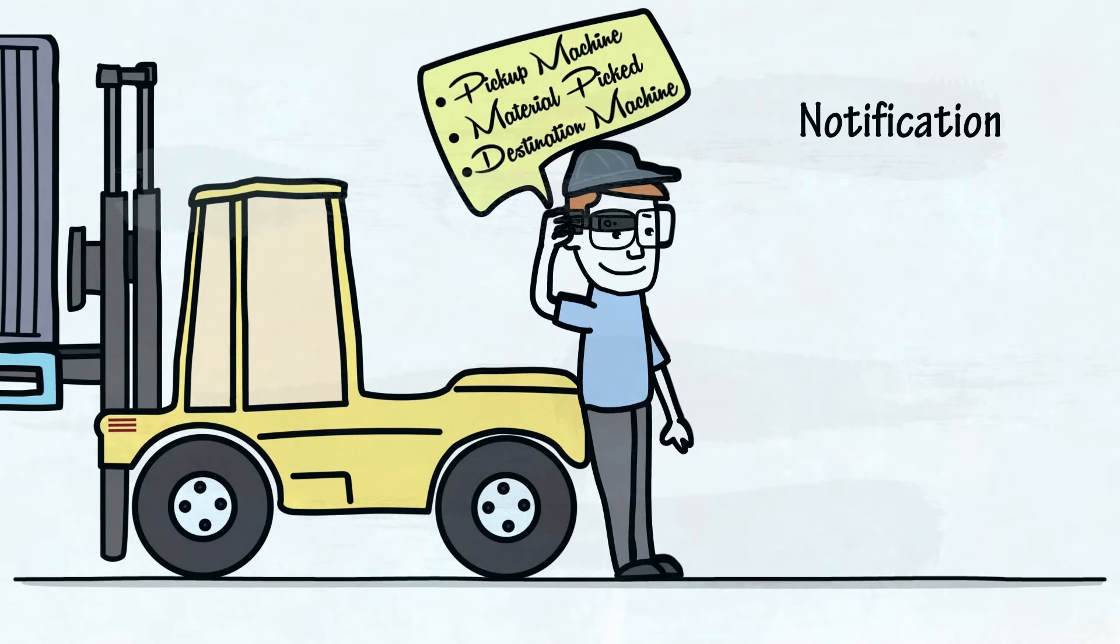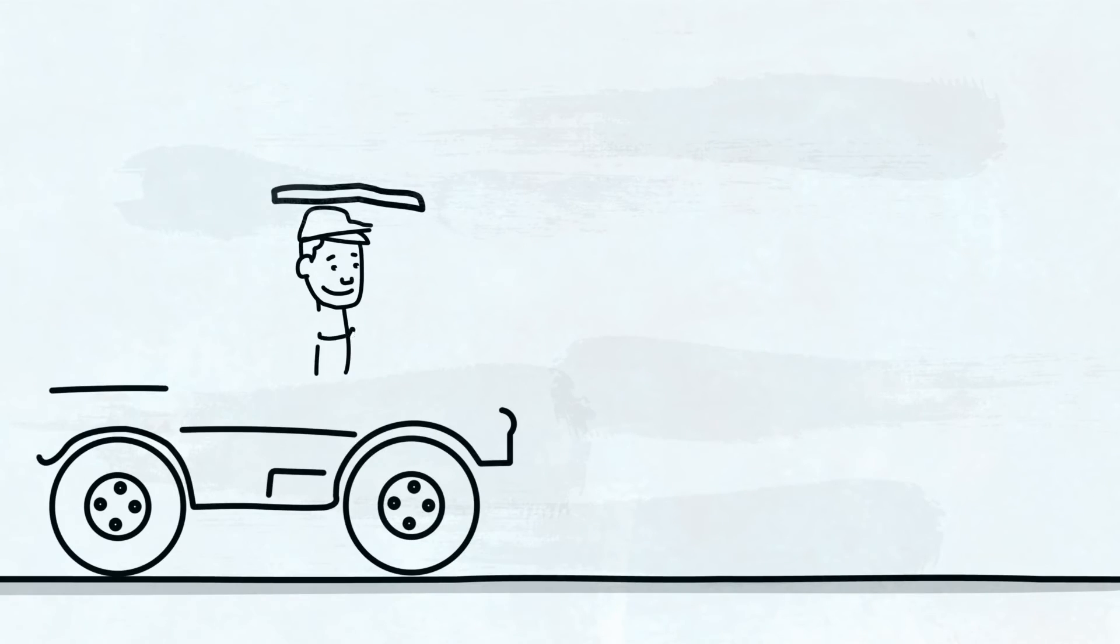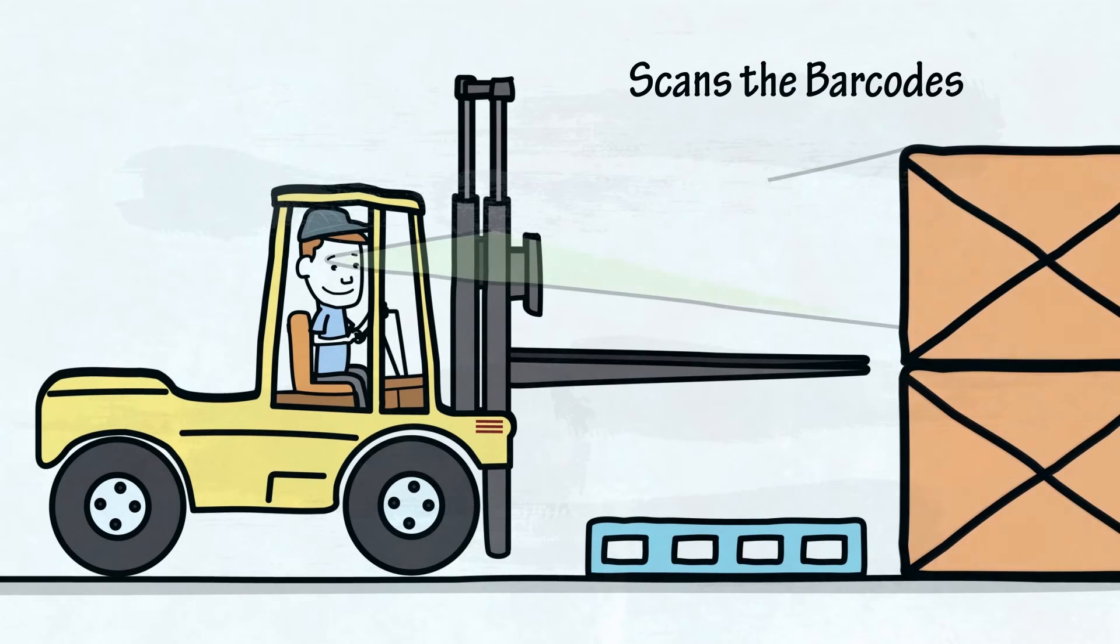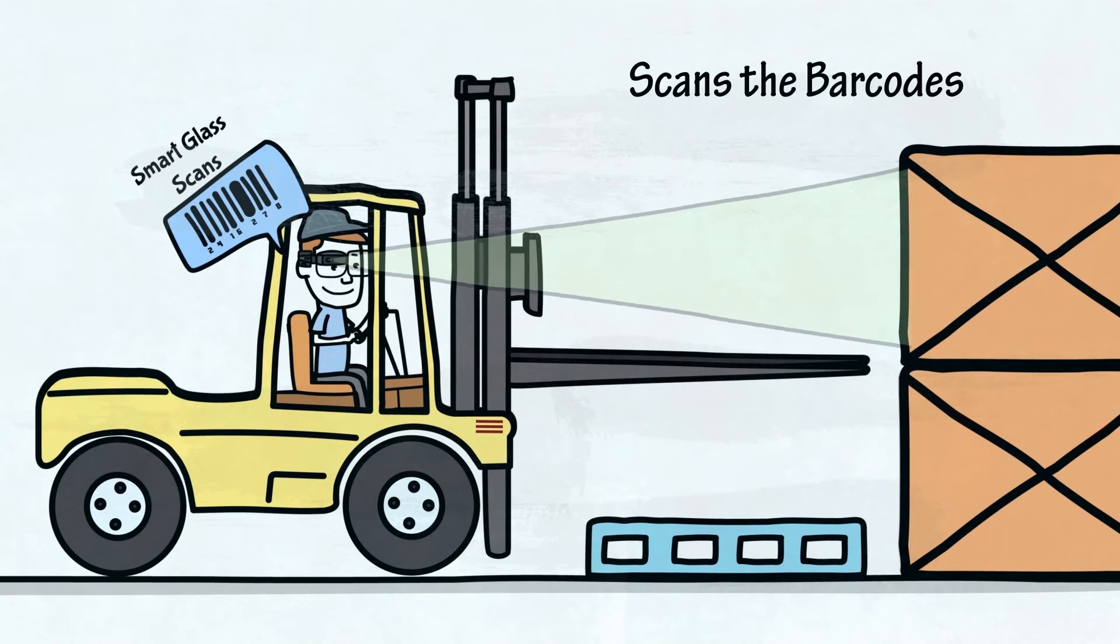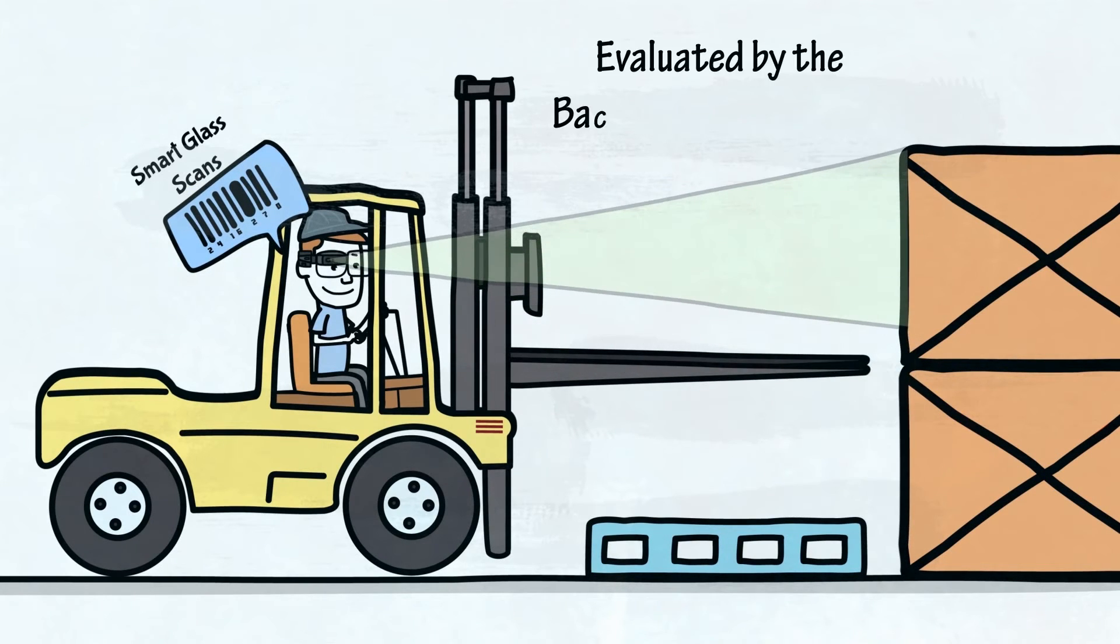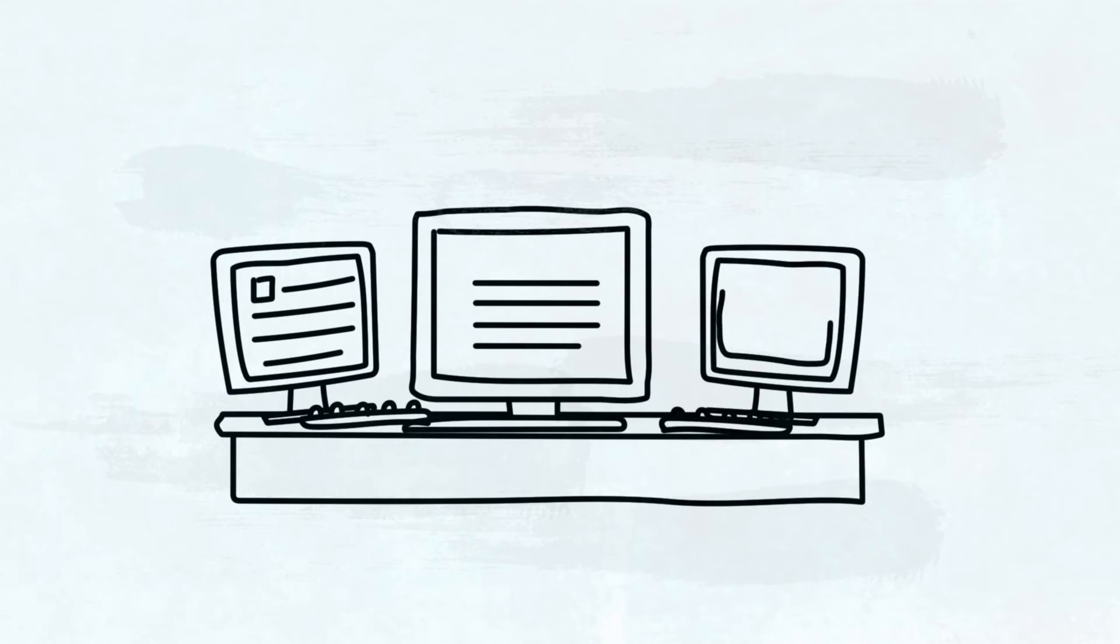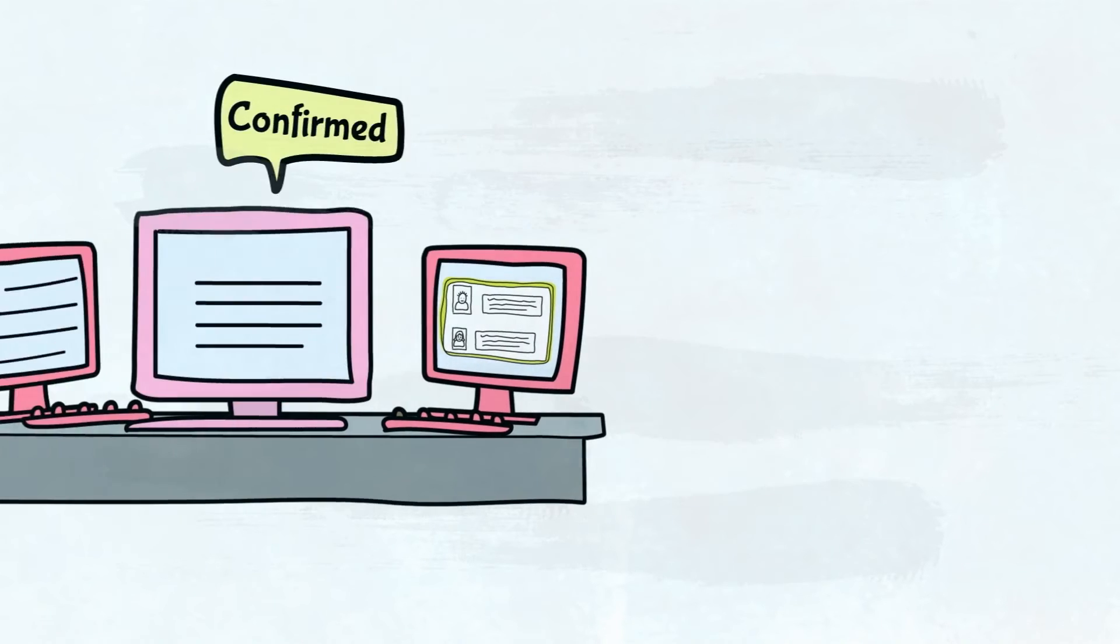He drives to the source machine and with the smart glass scans the barcodes on the machine and the material respectively. This scan information is evaluated by the back-end ERP system and validation of whether the operator has gone to the correct machine and identified the correct material to pick is done.